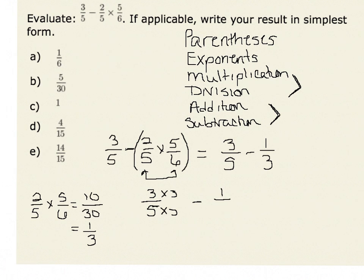Likewise, to get the fraction 1 third with a common denominator of 15, we would multiply numerator and denominator by 5.